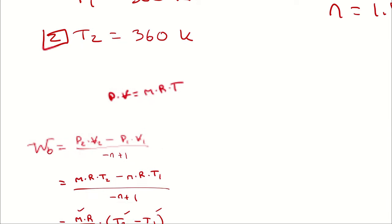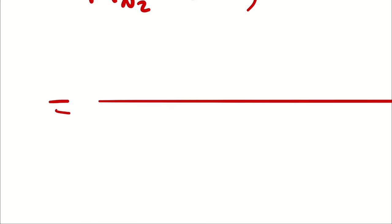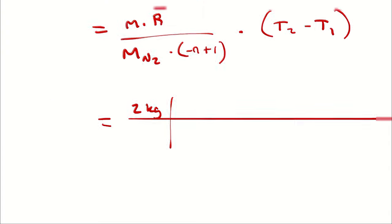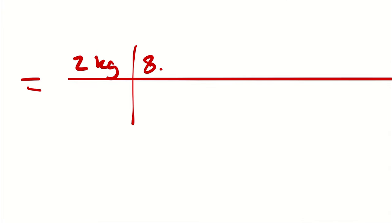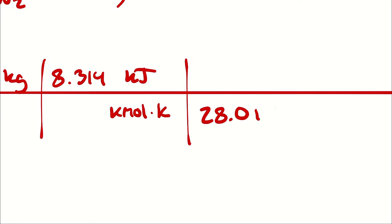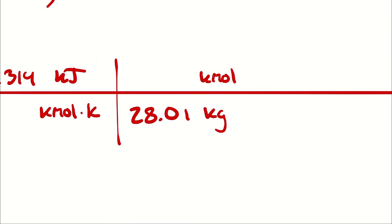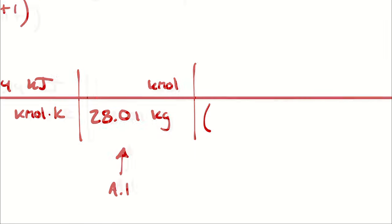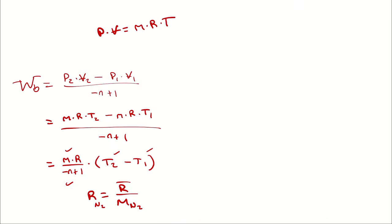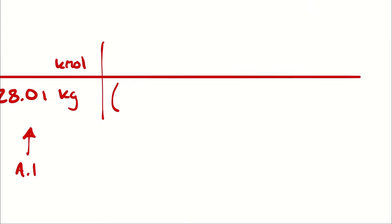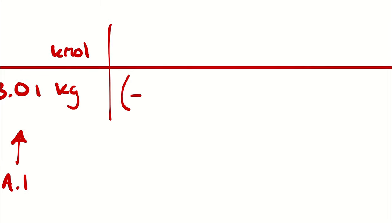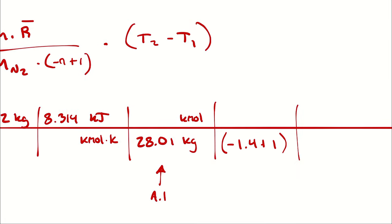First up, mass. The mass was 2 kilograms. The universal gas constant is 8.314 kilojoules per kilomole Kelvin. The molar mass of N2 was 28.01 kilograms per kilomole as per table A1. And then negative N plus 1 is going to be negative 1.4 plus 1 because N was equal to 1.4. So I could write that as negative 0.4, but I'll just write negative 1.4 plus 1, you know, just to try to reduce mental math errors.